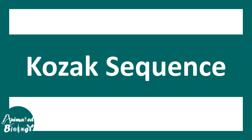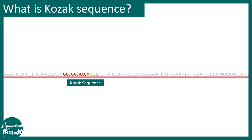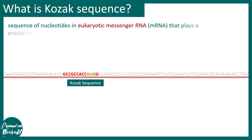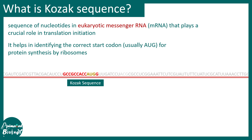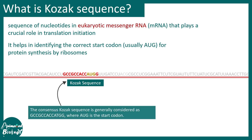Just like the Shine-Dalgarno sequence is present in prokaryotes, eukaryotes have the Kozak sequence. The Kozak sequence is a bit different and internally contains the start codon AUG. It has a similar function — it helps identify the correct start codon for protein synthesis.